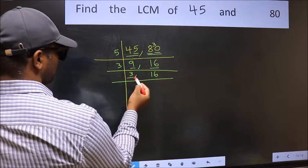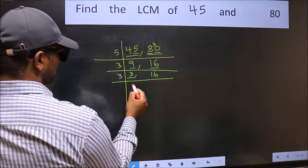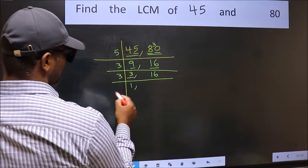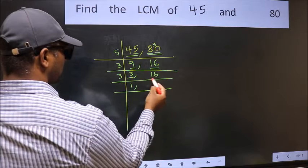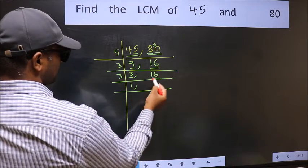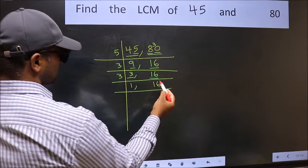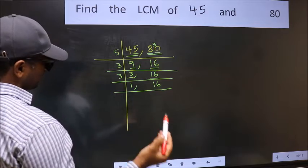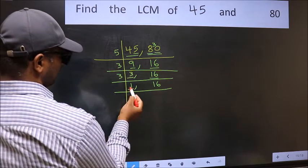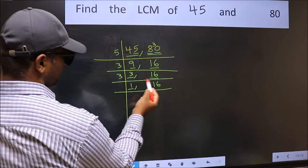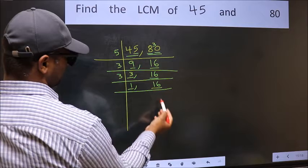Now here we have 3. 3 is a prime number, so 3 once is 3. The other number, 16, is not divisible by 3, so you write it down as it is. Now we got 1 here, so focus on the next number, 16.